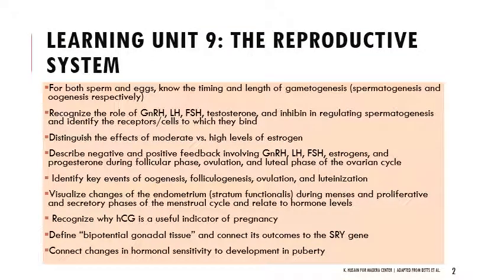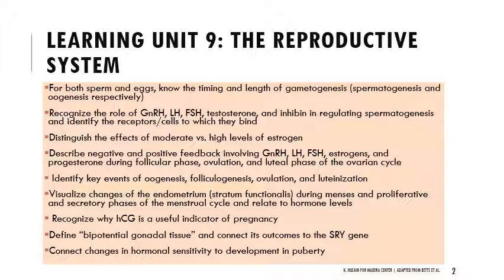Learning objectives for this unit: you need to know for both sperm and eggs the timing and length of gametogenesis — that's the formation of gametes — spermatogenesis for sperm and oogenesis for eggs. For spermatogenesis, you need to recognize hormonal regulation: the role of GnRH, LH, FSH, testosterone, and inhibin in regulating that process, and identify specific cells and receptors to which they bind. For estrogen, specifically estradiol, you need to distinguish the effects when it's at a moderate level versus a high level — whether they're inhibitory or stimulatory.